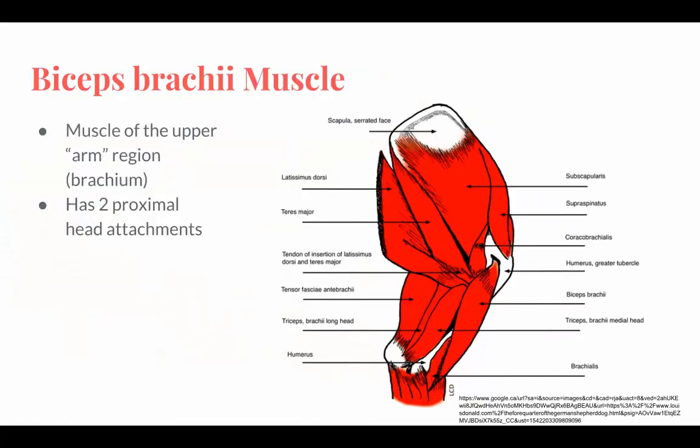Biceps brachii muscle — muscles of the upper arm region, the brachium. It has two proximal head attachments and extends from the distal end of the scapula to the proximal end of the radius. Its function is to flex the elbow joint.